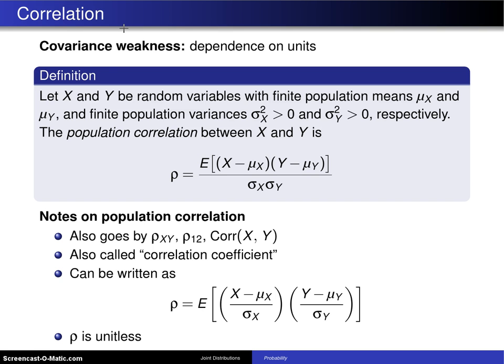Here is the definition: Let X and Y be random variables with finite population means μ_X and μ_Y, respectively, and finite population variances σ_X² > 0 and σ_Y² > 0, respectively. The population correlation between the random variables X and Y is...